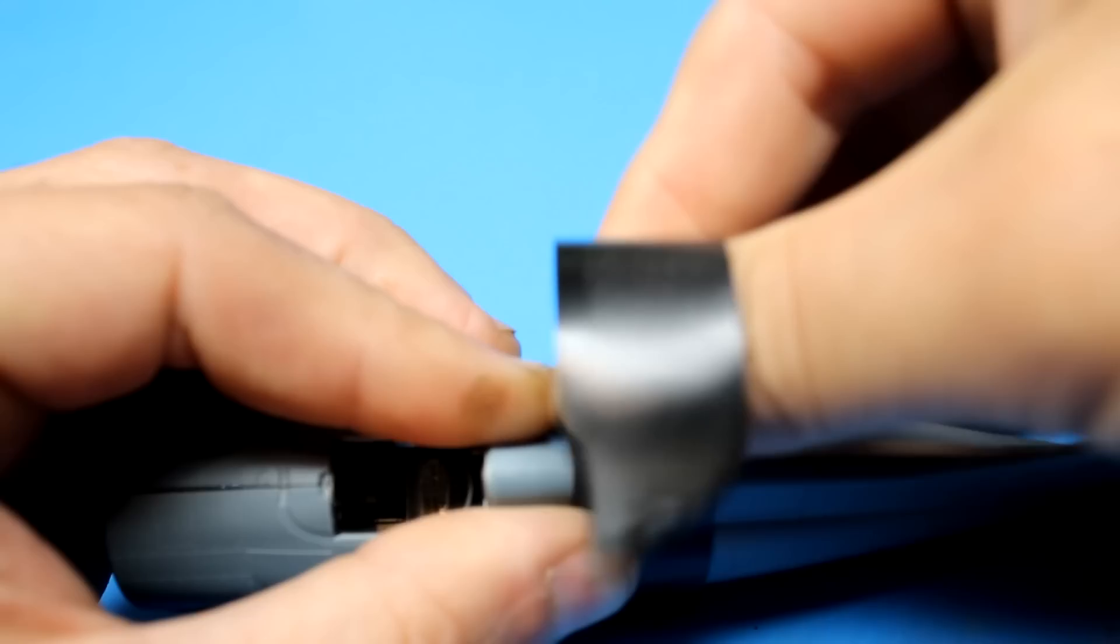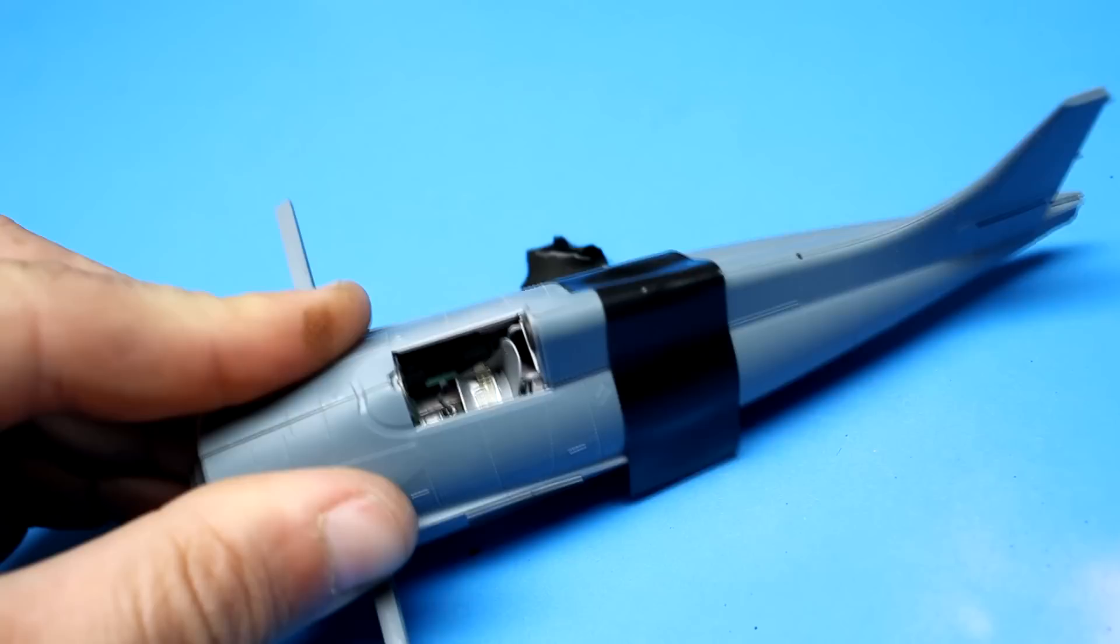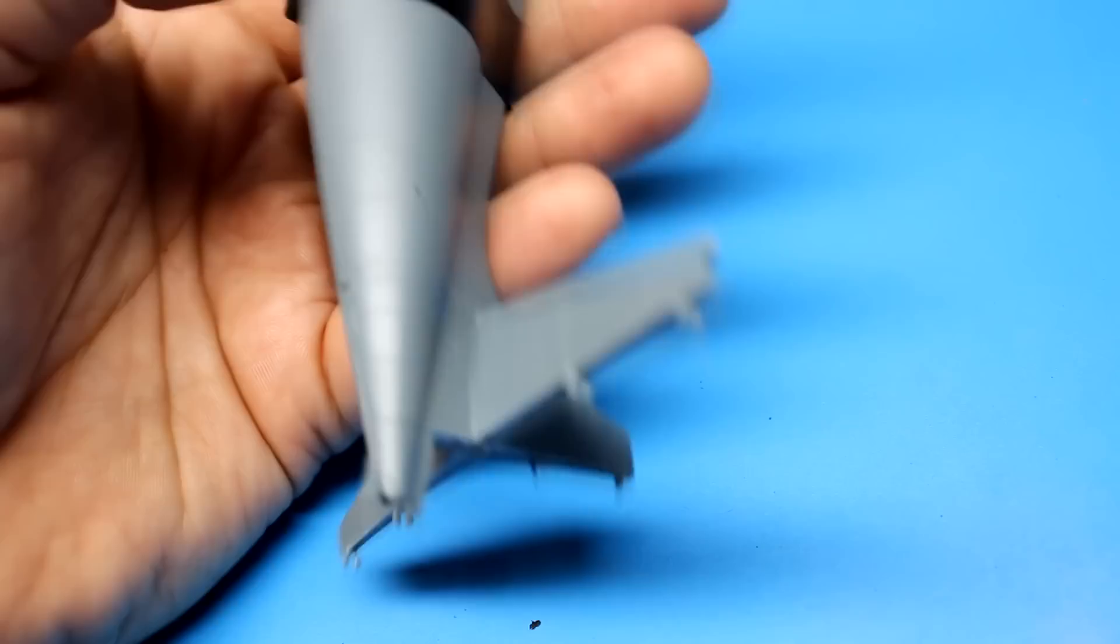The two fuselage halves go together very well and there's no fit issues when you're bringing them together. The only part that didn't fit great and needed some putty was between the bottom of the horizontal stabilizer and the fuselage. I had to put a little bit of putty in here to clean up that gap.